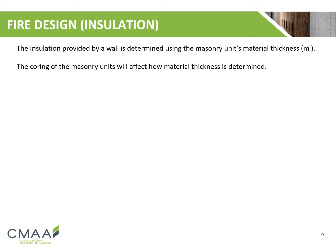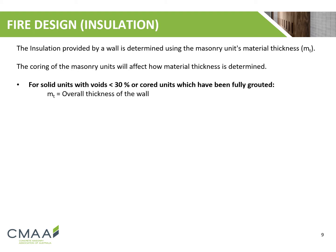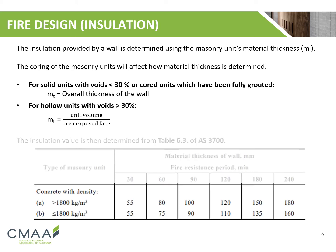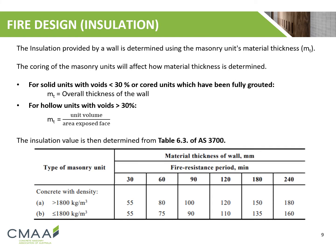The insulation provided by a wall is determined by the masonry unit's material thickness. Coring of masonry units will affect how the material thickness is determined. For solid units with voids smaller than 30%, or cored units which have been fully grouted, the material thickness is equal to the overall thickness of the wall. For hollow units with voids greater than 30%, the material thickness is equal to the unit volume divided by the area of the exposed face. Once material thickness is determined, Table 6.3 of AS 3700 can be used to identify the insulation fire resistance period.